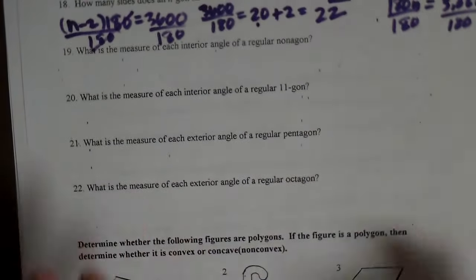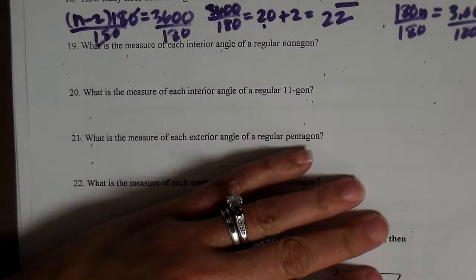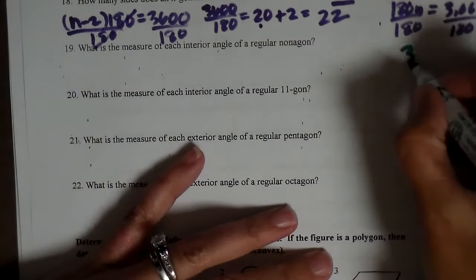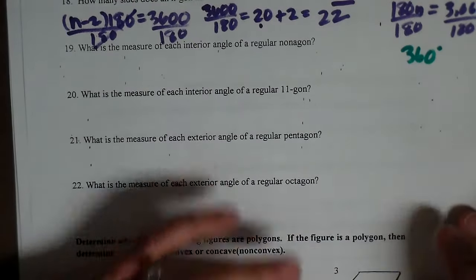Let's look at the exterior angles now. Remember that the exterior angle sum for any polygon is always 360. Always.